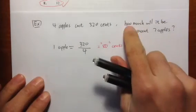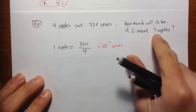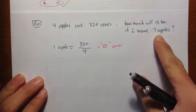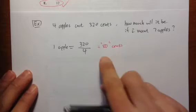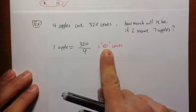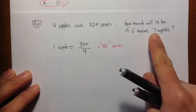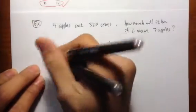And I want to know how much will it be if I want a total of seven apples. Well, each apple is 80 cents. I just need to multiply by seven.